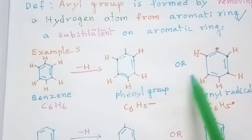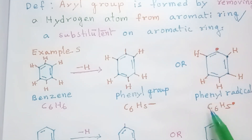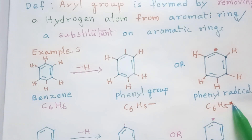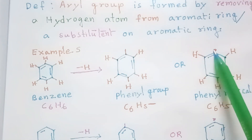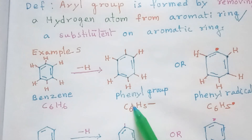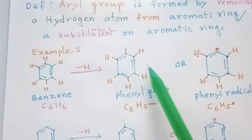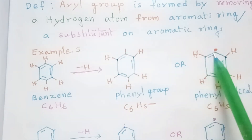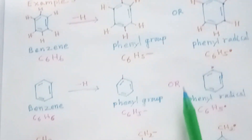Alternatively, we can represent it as a radical. As a radical, we write C6H5 with one small dot, which represents an electron on the carbon atom. This is the phenyl radical. Phenyl group and phenyl radical are one and the same because both are benzene minus one hydrogen atom.